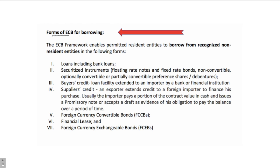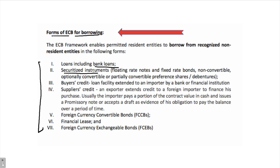What are the ways in which you can borrow under external commercial borrowings? There are 7 ways. You can borrow as a bank loan — taking a loan from any foreign bank. You can borrow as a securitized instrument, meaning fixed rate bonds and flexible rate bonds, non-convertible, optionally convertible, or partially convertible shares or debentures.